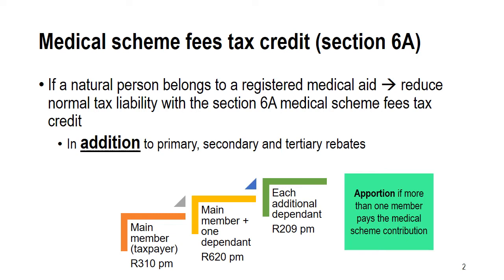A few important things to note. First, these amounts are per month, so to determine the Section 6A tax credit we need to identify how many months the taxpayer was a member of the medical aid. You need to carefully identify who the main member is and how many dependents are on the medical aid. Second, these are fixed amounts irrespective of the level of contribution — even if you contribute R10,000 a month, you still only qualify for these set amounts.